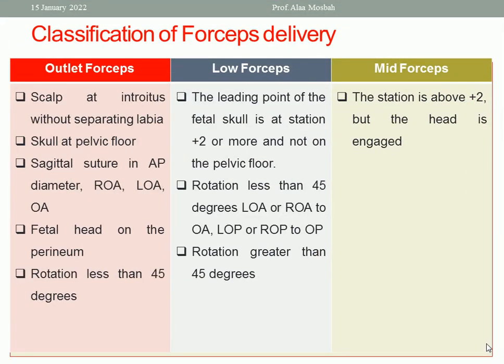In outlet forceps, the scalp is at the introitus without separating the labia, skull at the pelvic floor, at the perineum, sagittal suture in the anteroposterior diameter, right or left occiput anterior, fetal head on the perineum, and rotation less than 45 degrees. In low forceps, both rotations are present — less than 45 degrees and more than 45 degrees, with positions including left occiput anterior, right occiput anterior, left or right occiput transverse.